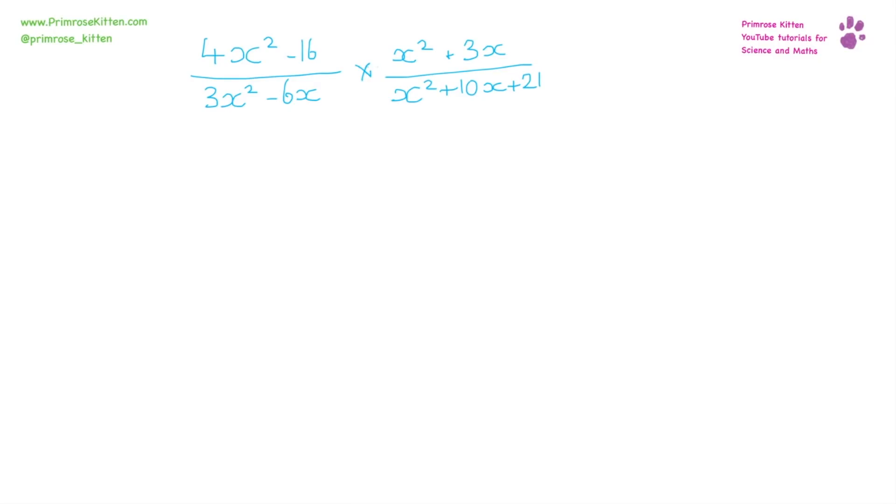The first step in simplifying this is to factorize absolutely everything. That should be your first instinct whenever we see something that has multiple terms of x in, or when we have something that has an x squared or anything squared in.